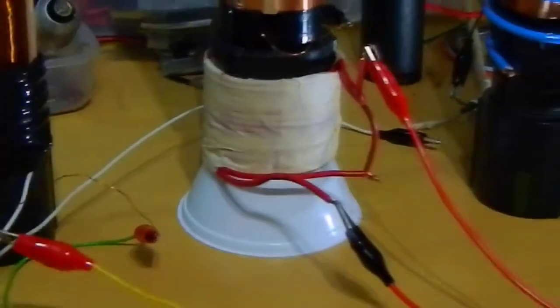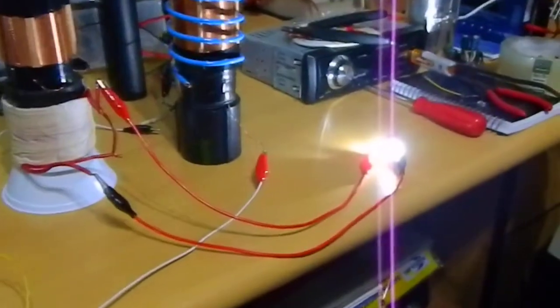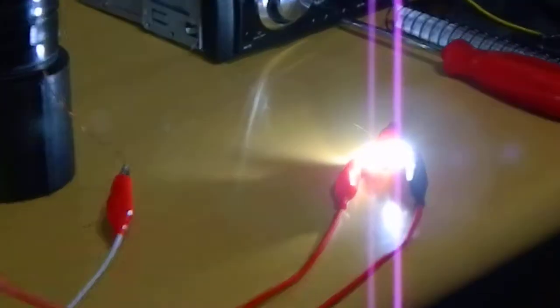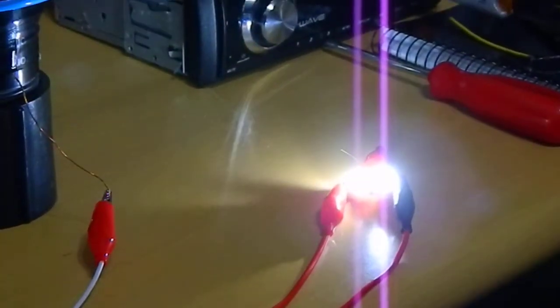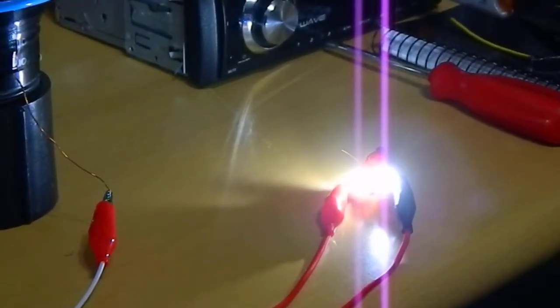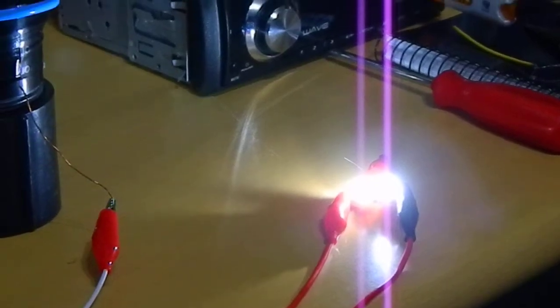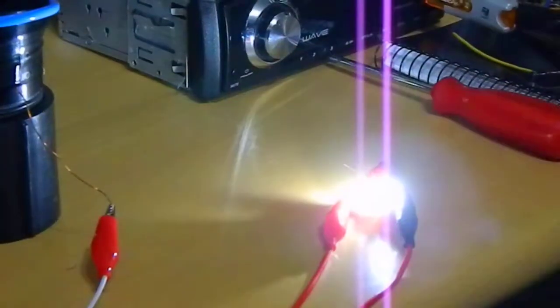And this Tesla Bifiler is connected to those two 1W LEDs, high power LEDs. They are ultra bright.